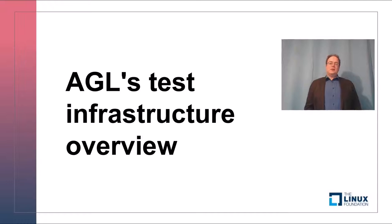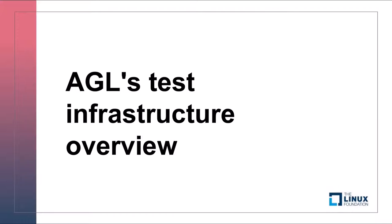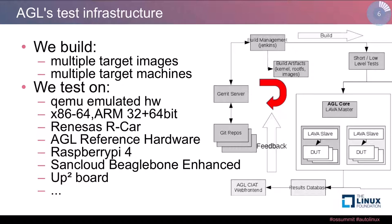Let me introduce AGL's test infrastructure and explain what components we use. We build for multiple target machines and multiple images. The build happens in the Jenkins server, which is our scheduler to execute the builds. The builds are then done with BitBake.